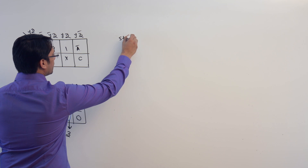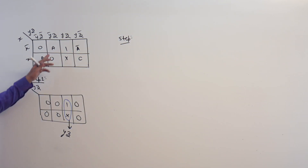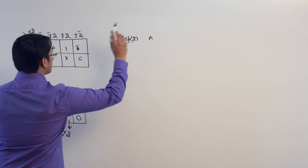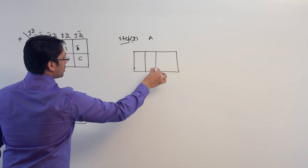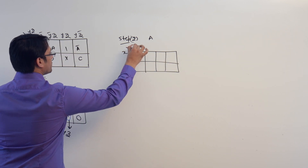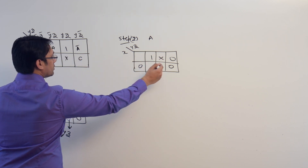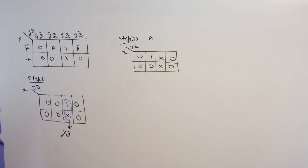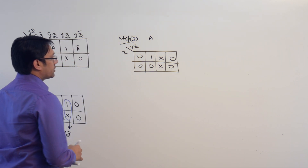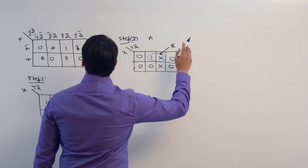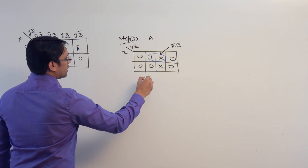Step two: take one variable into the K-map. We start with a. Keep variable a as one, keep all the other variables as zero, and keep any existing ones as don't care. So in axes x, y, z we have: zero, zero, zero, don't care, don't care, zero, and zero. Now get a SOP expression. We can make a subcube representing x complement, z. Therefore the SOP expression for this step is a dot x complement z.